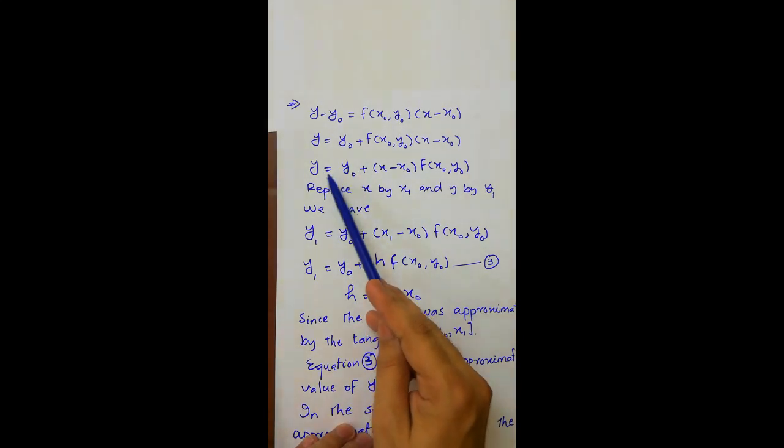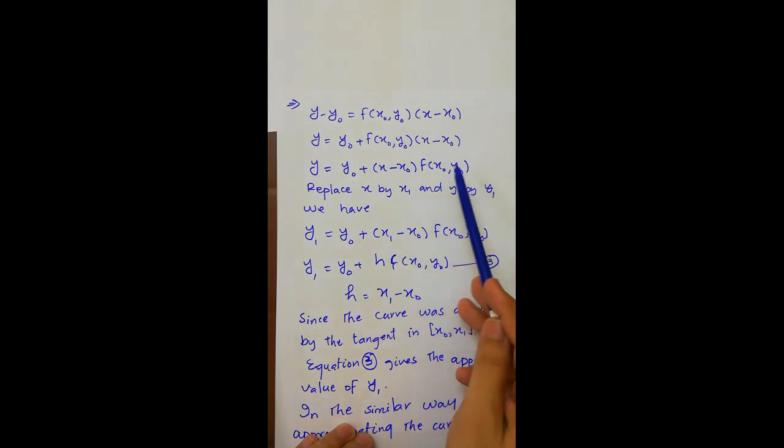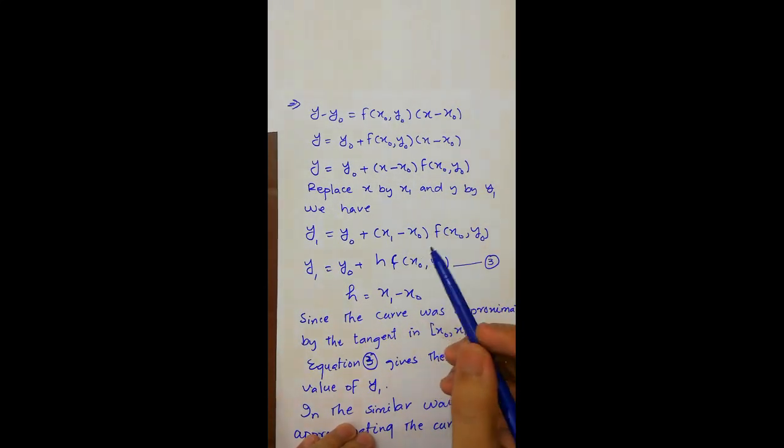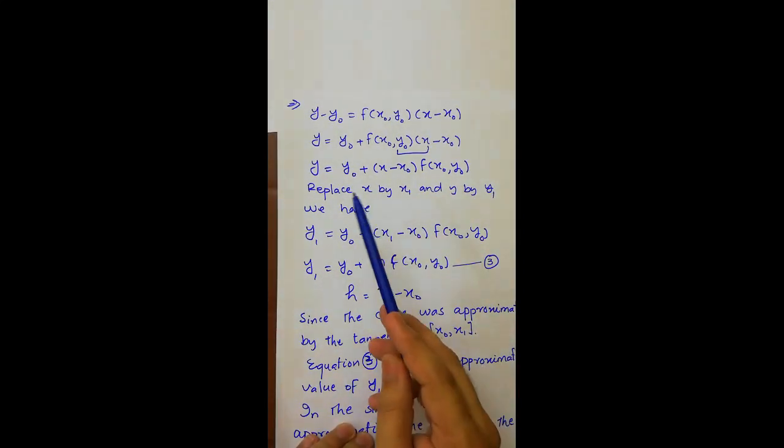So y equals y0 plus f of x0, y0 times x minus x0, or it can be written as y equals y0 plus x minus x0 times f of x0, y0.